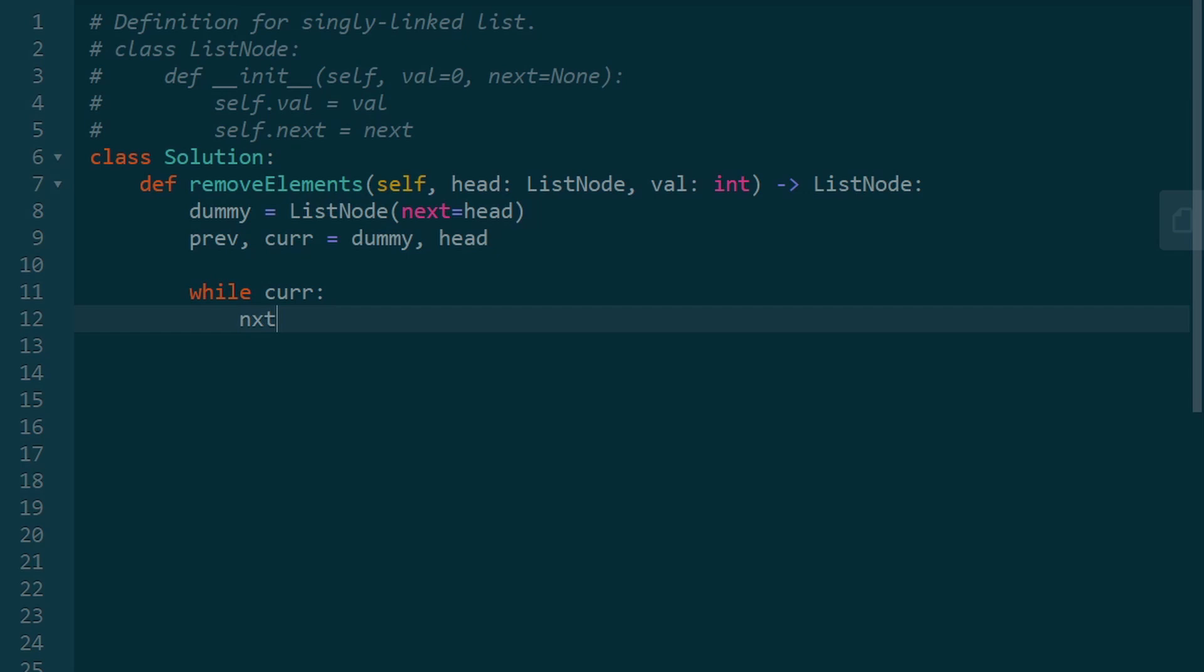And so we're just going to keep iterating through this list while current is not null. And I'm going to get the next pointer, which is just current.next. I'm going to put it in a variable so we make sure that we have it stored. And I'm just going to check if current.val is equal to the target value that we're trying to eliminate, which is also a parameter, if it's equal to val, then we know we can delete current. And we can do that by updating our pointers. So previous.next, instead of this pointing at current, we can point it at the next node in the linked list.